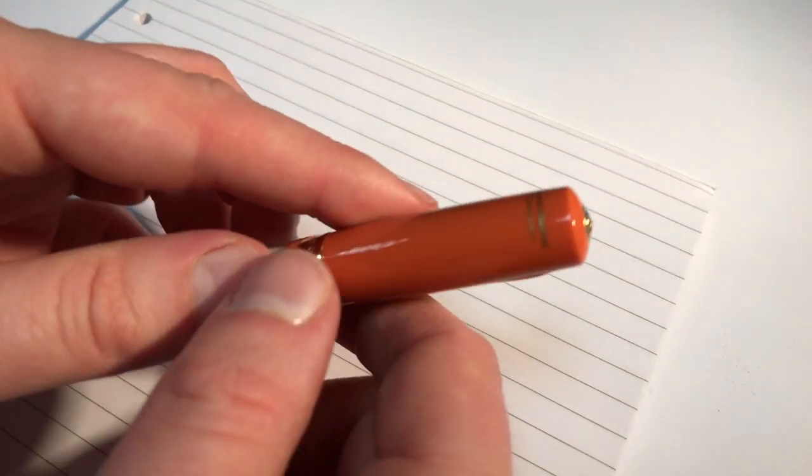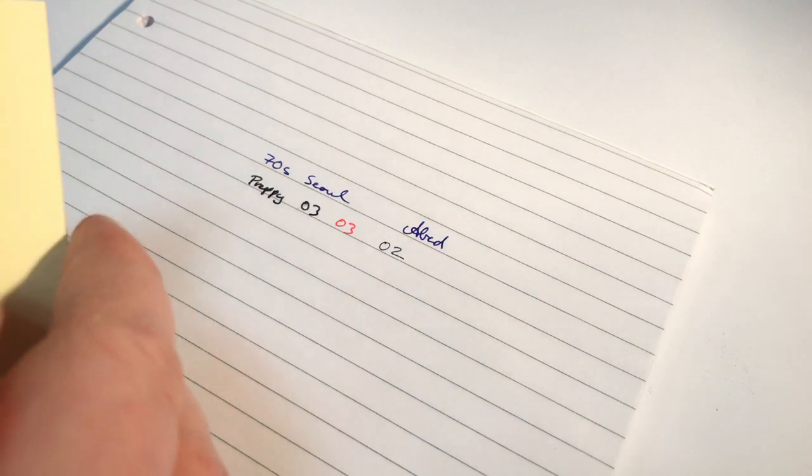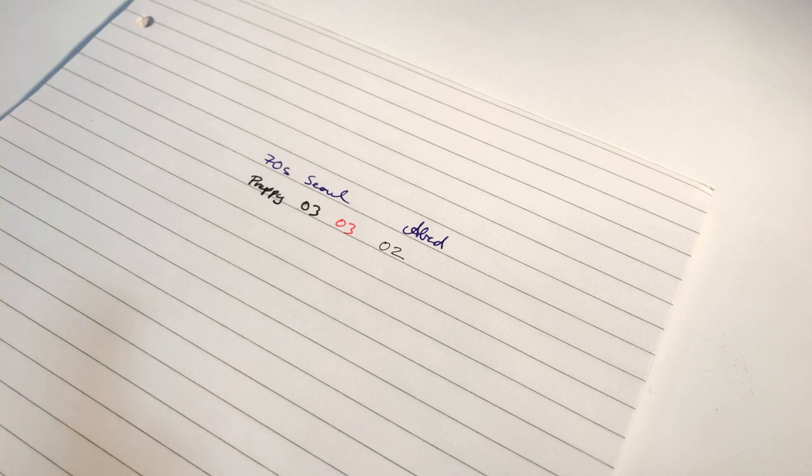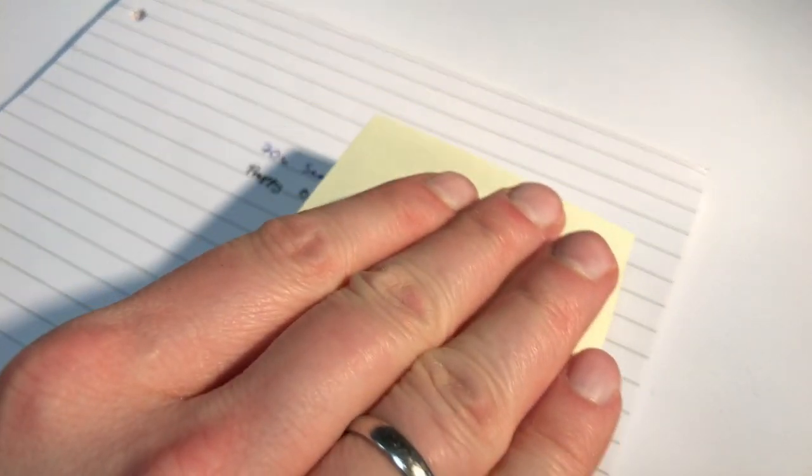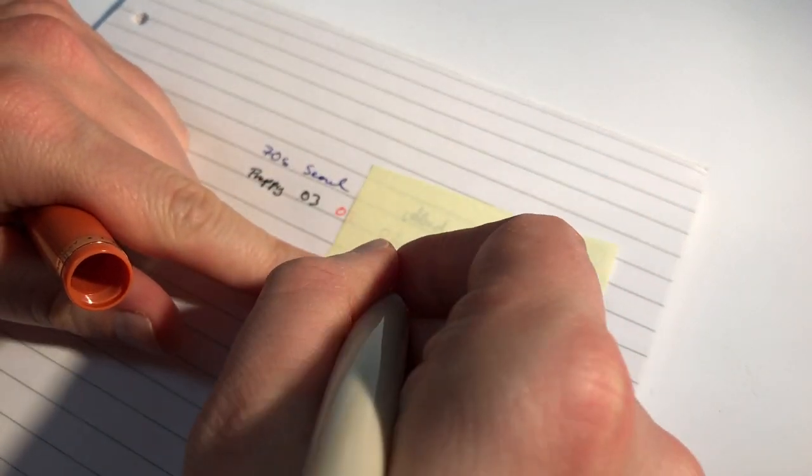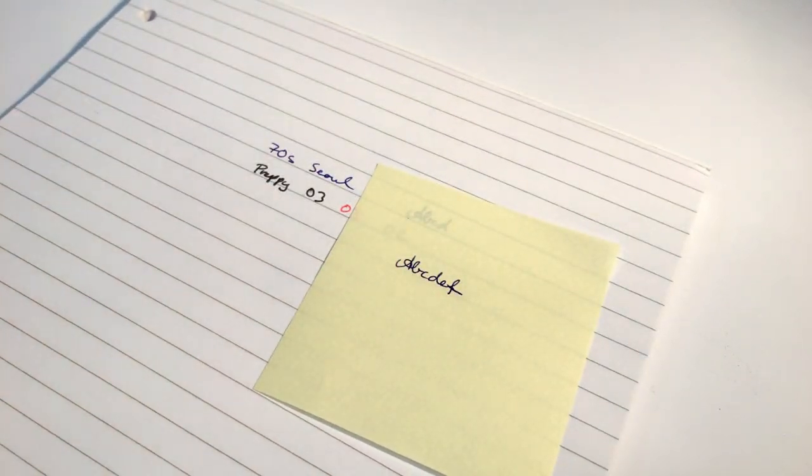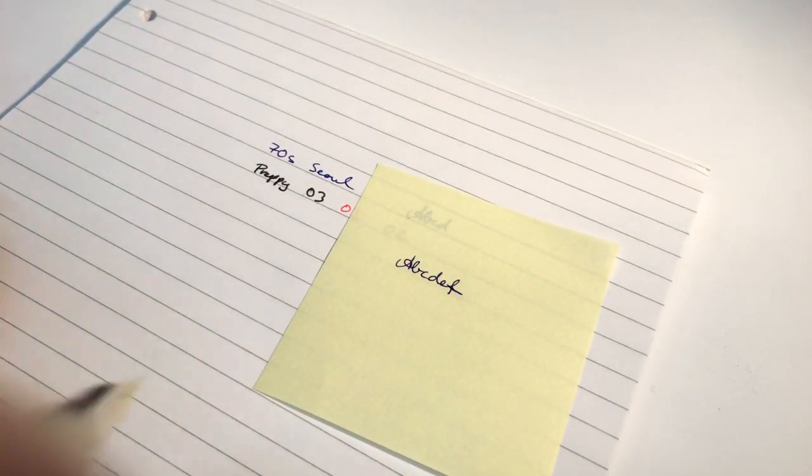But yeah, the 70s Soul, very fine nib, extremely smooth. Let's use the Post-it as a comparison. And now the 0.2.